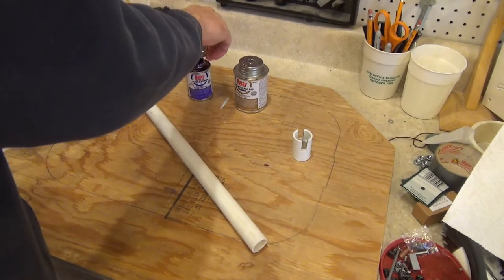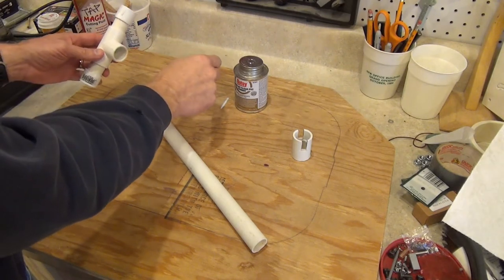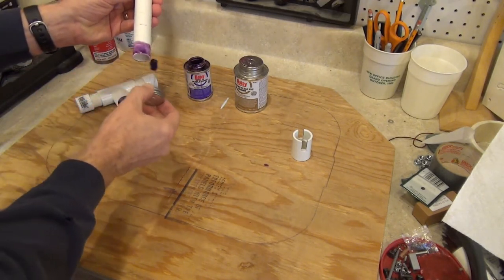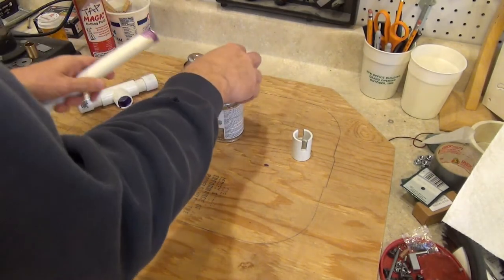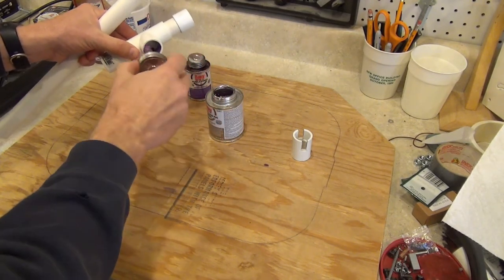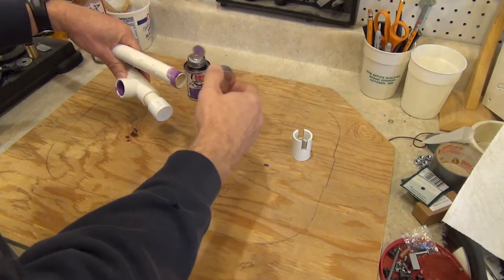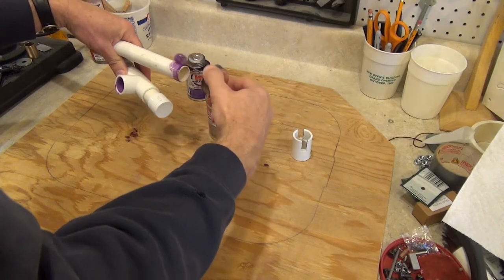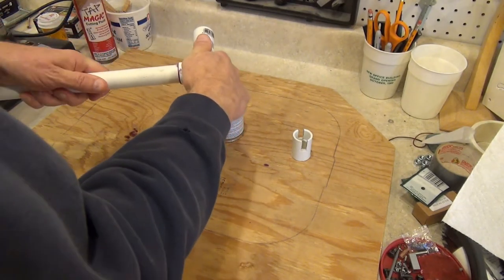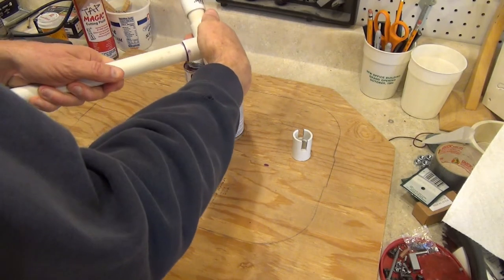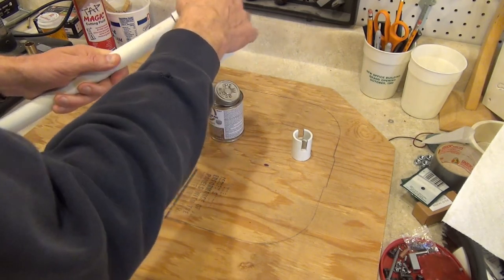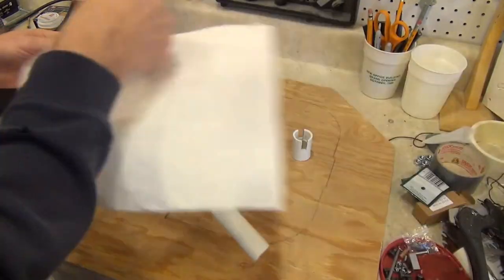First, prime the tee and one end of the pipe. Give each piece a generous coat of PVC cement. Press the pieces together and hold them firmly for about 10 seconds. Wipe off any excess cement.